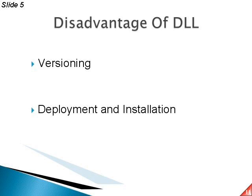For example, suppose applications A, B, and C are all using a common DLL called aptec.dll. Now we create a new aptec.dll that is required by a new application D. Once the new aptec.dll is loaded, the existing DLL is overridden. Application D will get the benefit of the new aptec.dll, but A, B, and C will be broken because they depend on the earlier version. That is the versioning problem.